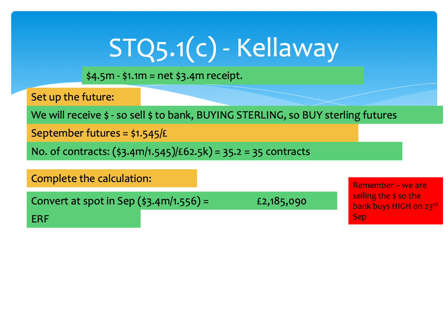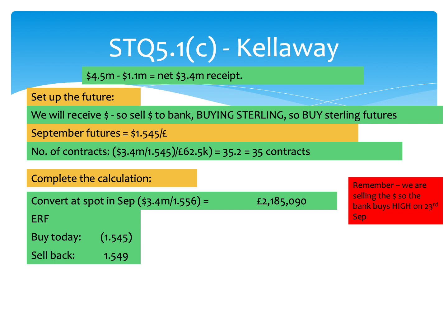The actual exchange rate future is a separate transaction. We'd already decided we would have bought today at the September futures price of 1.545. We decided to buy because we needed to buy sterling futures. We're then going to sell them back on the 23rd of September. The scenario tells you that the futures on that date are worth 1.549. So there's a bit of basis risk — it's not exactly 1.556. We bought something and sold it back for a slightly higher figure, giving us a gain of 0.004 — so 0.4 cents per pound hedged.